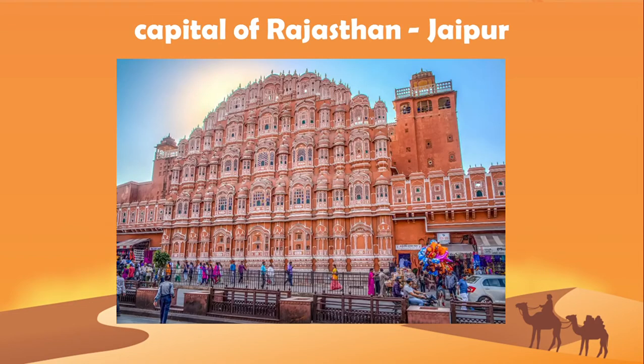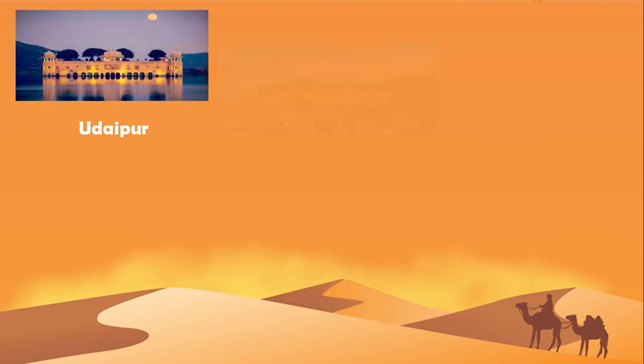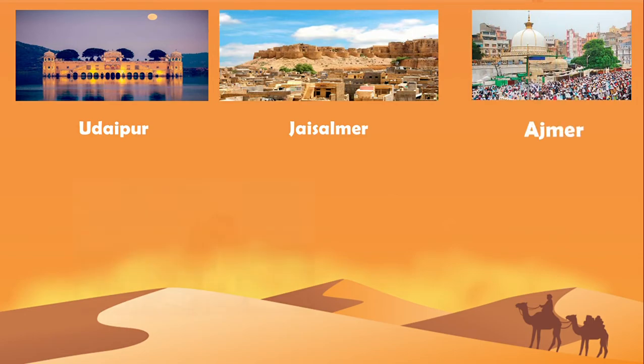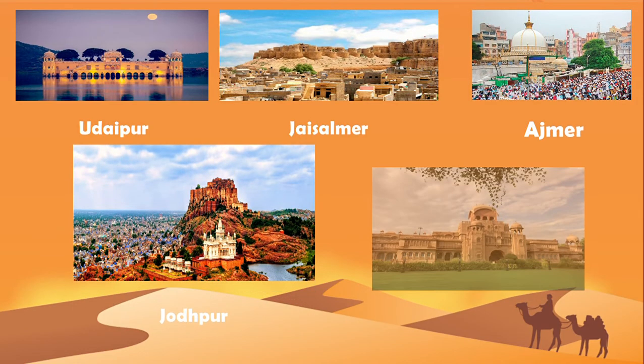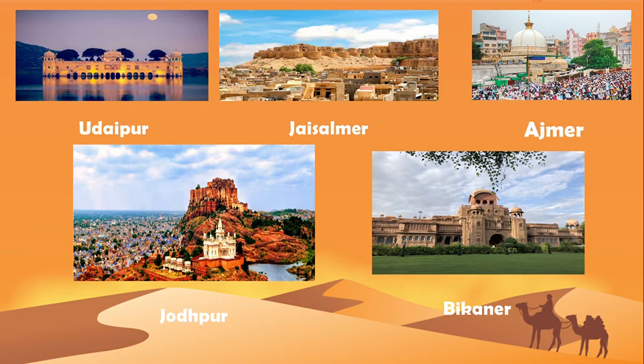Jaipur is the capital of Rajasthan. It is also called the pink city because of its pink buildings. Rajasthan is famous for its palaces, temples and forts. Other important places of Rajasthan are Udaipur, Jaisalmer, Pushkar, Jodhpur and Bikaner.